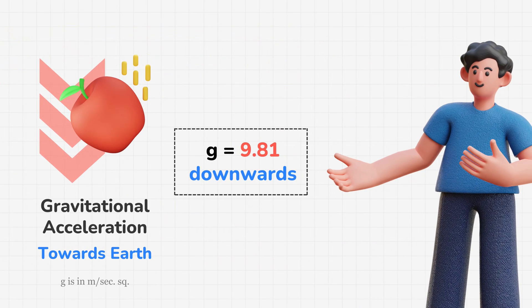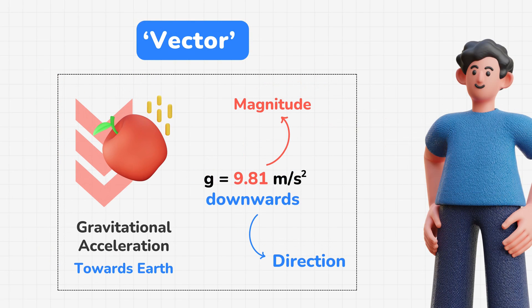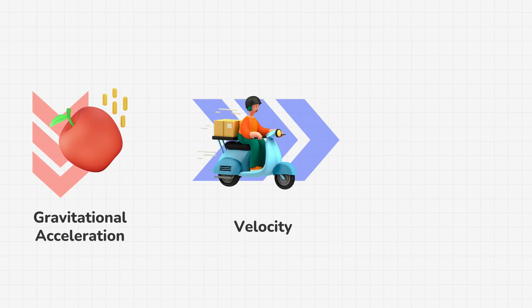Similarly, gravitational acceleration g towards the earth suggests both magnitude and direction, making it a vector quantity. And in physics, you will find many of these vector quantities like velocity, air drag, and many more.